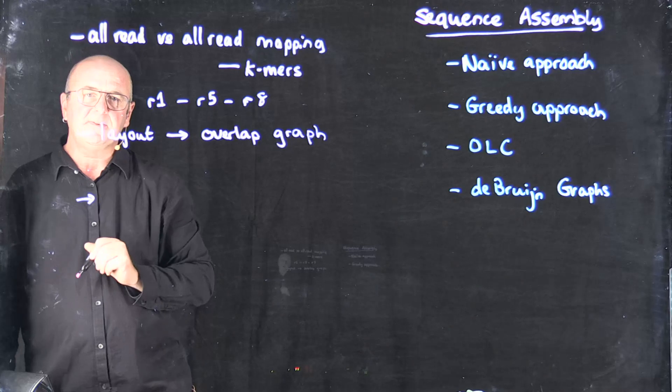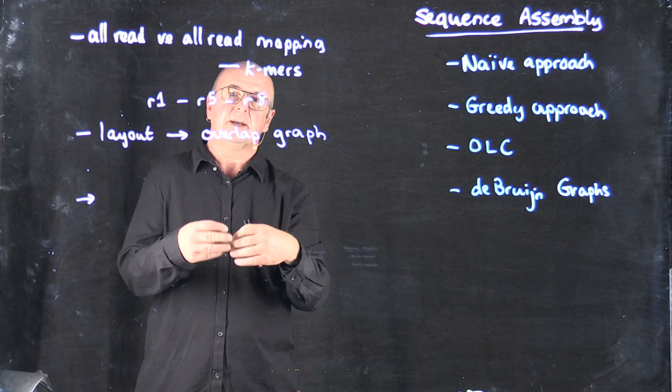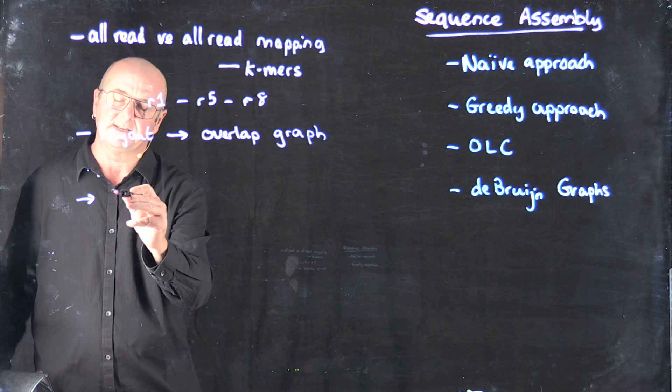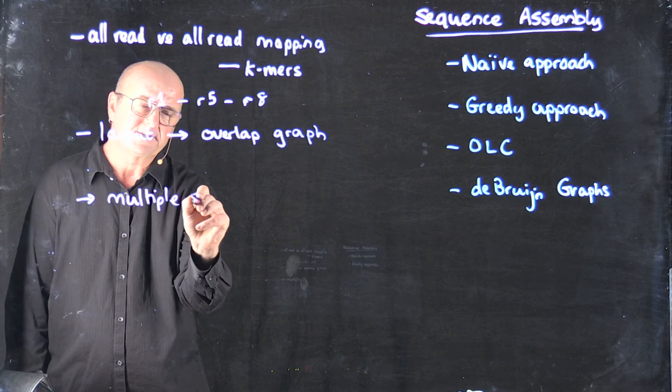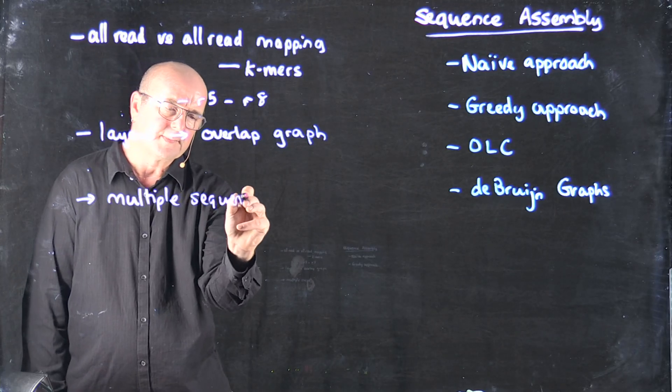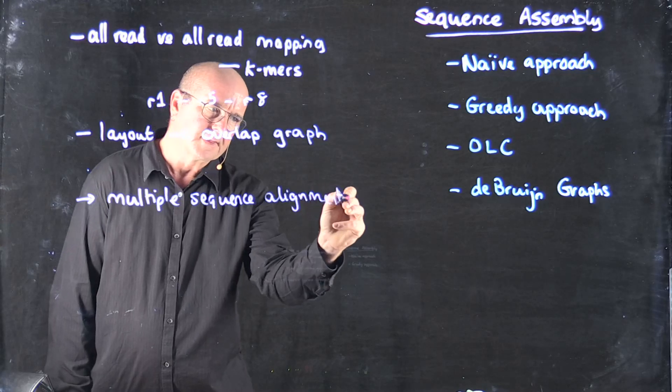Once we've got our overlap graph, we basically try and resolve any inconsistencies in our graph using something like a multiple sequence alignment approach.